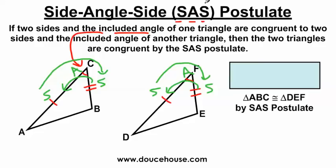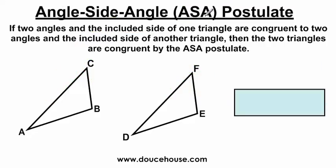Just look at the wording: the angle is in between the two sides. If you look at the postulate name, it gives you a hint on where the angle needs to be in the triangle compared to the two sides we're focusing on.